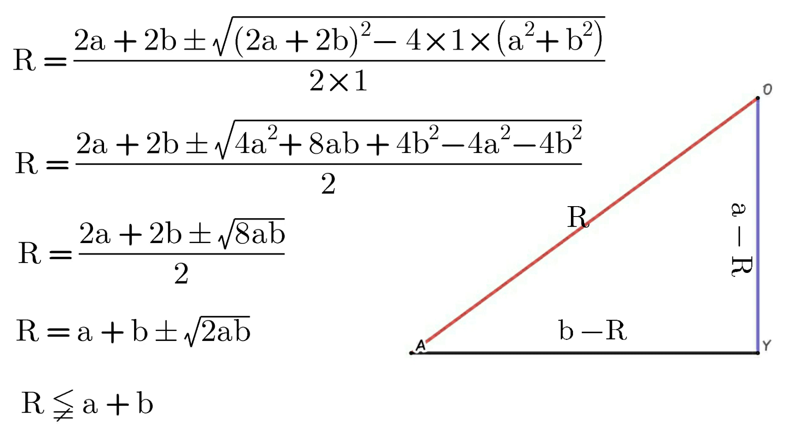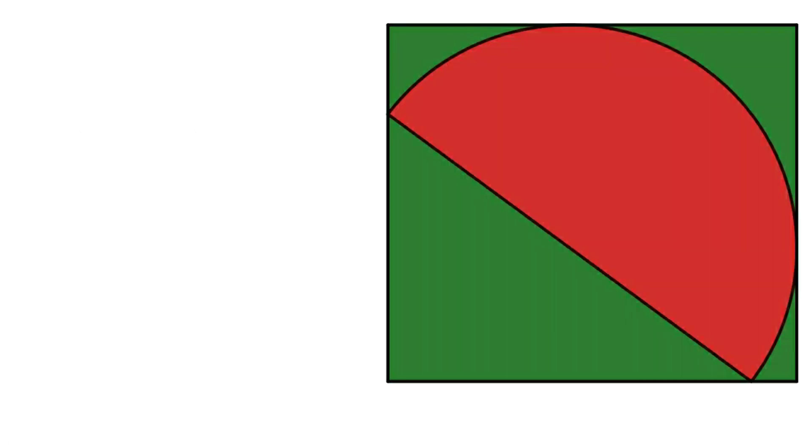We know R is less than A plus B because the semicircle is inscribed in the rectangle. So R equals A plus B minus the square root of 2AB. Let's come back to the problem. Here the sides of the rectangle are 8 and 9, so the radius of the semicircle equals 8 plus 9 minus the square root of 2 times 8 times 9. Which equals 17 minus 12.